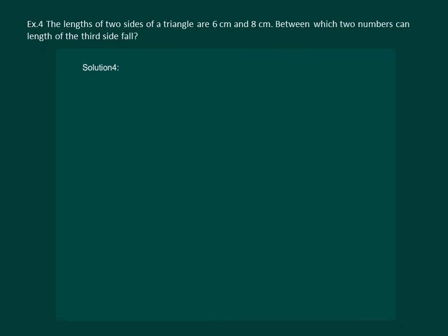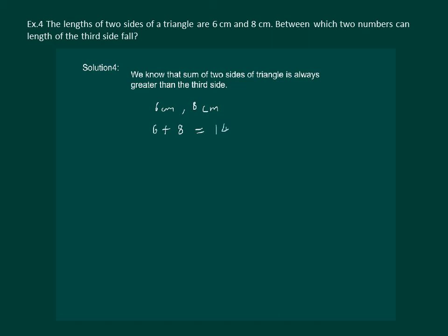Let us read the question: The lengths of two sides of a triangle are 6 cm and 8 cm. Let us add them to find the bound for the third side. The sum is 14, which means the third side has to be less than 14.